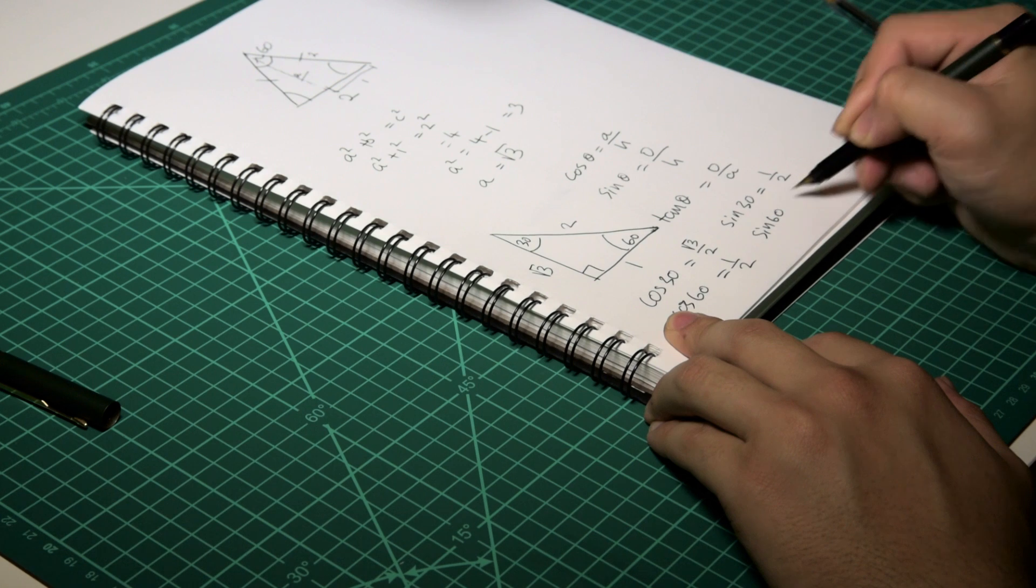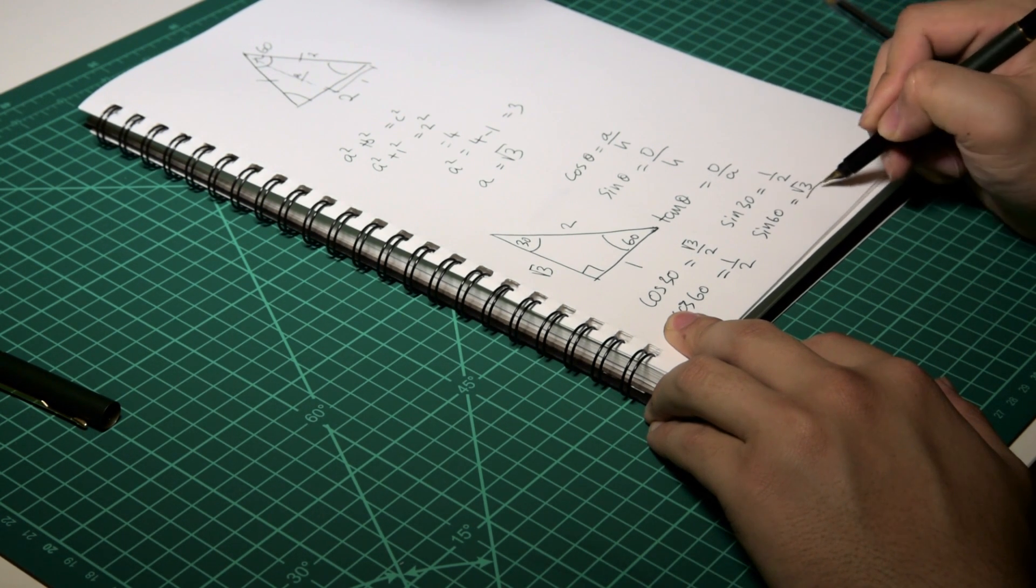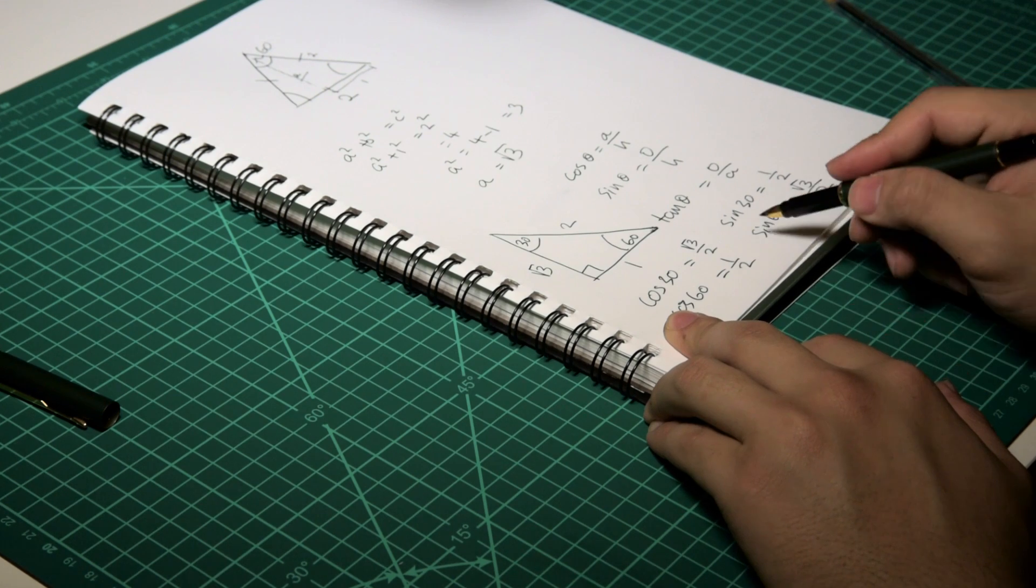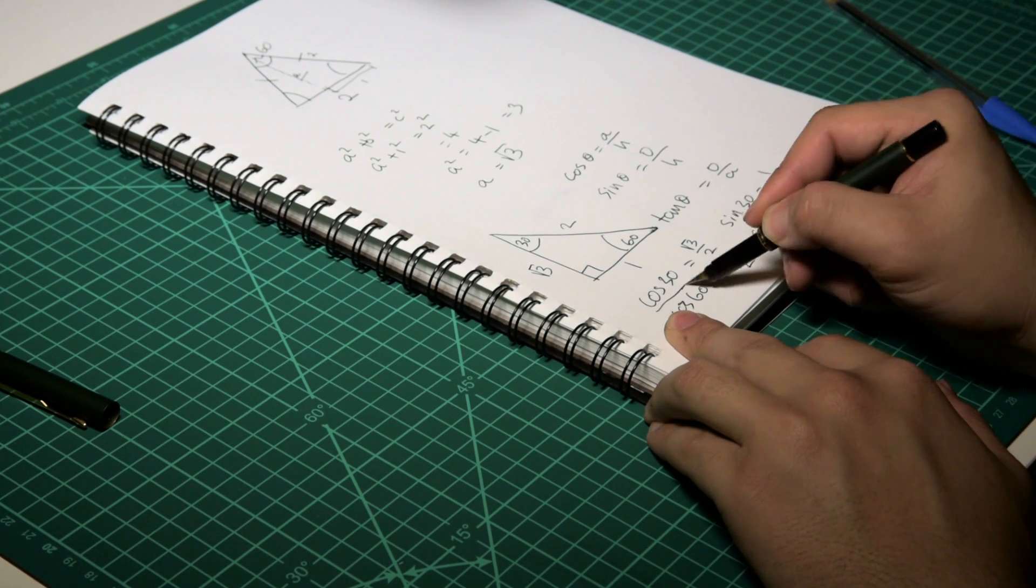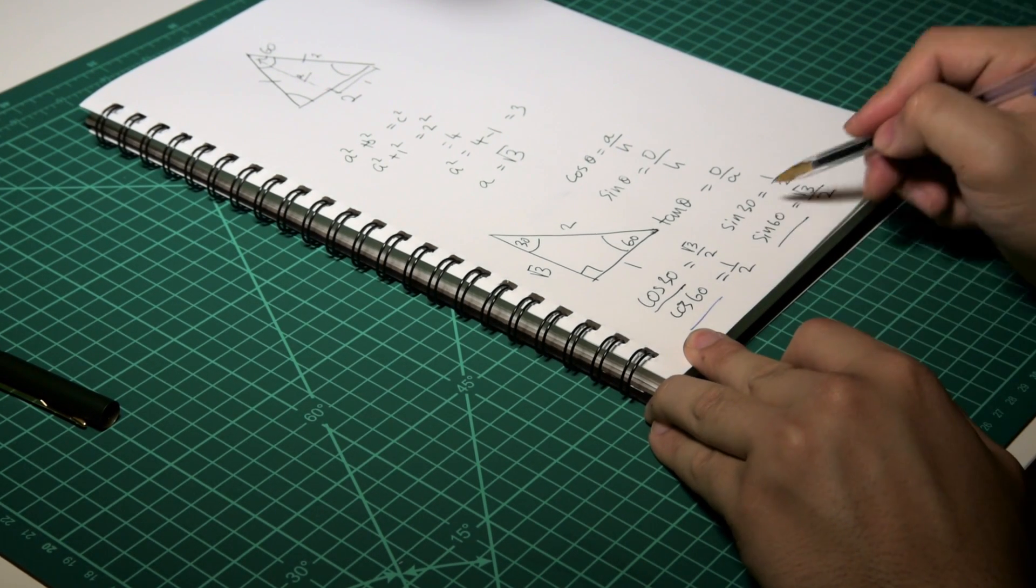Sin 60 is equal to square root of 3 on 2. So you see that these two are equal and these two are equal.